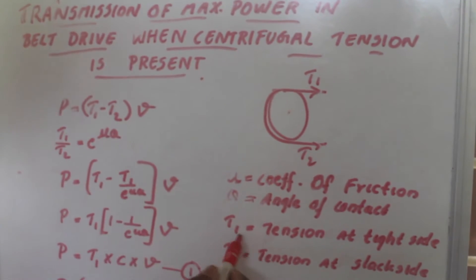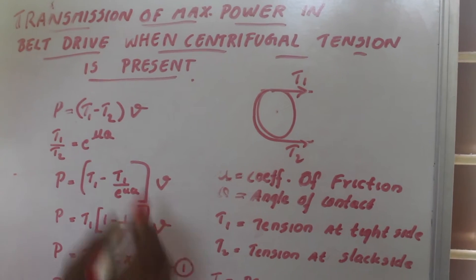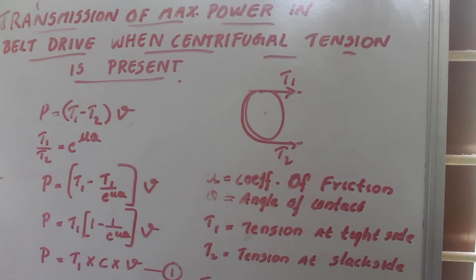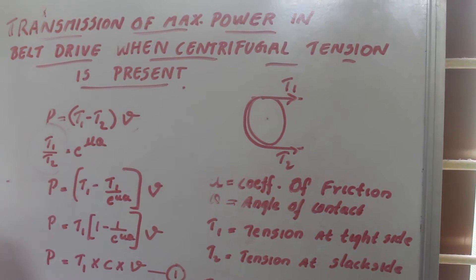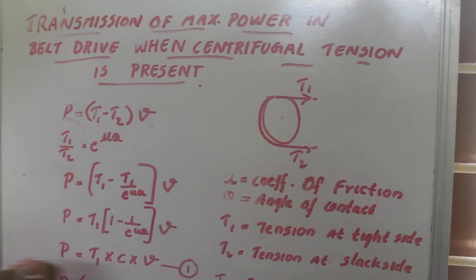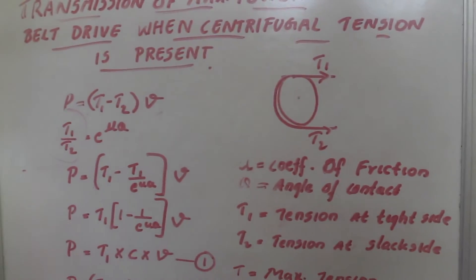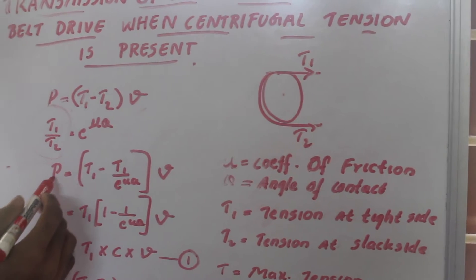Here T1 is the tension at tight side and T2 is the tension at slack side, and v is the velocity. We know this equation: the ratio of the belt tension is equal to e raised to μθ, where μ is the coefficient of friction and θ is the angle of contact.